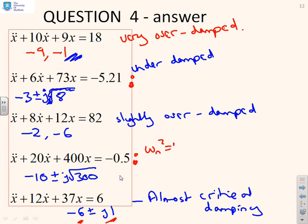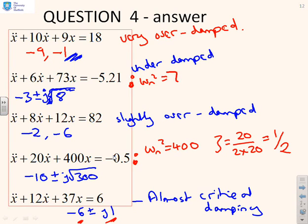So for this one, ω_n squared equals 400. And so therefore, you're going to get ζ equals 20 over 2 times 20, which is a half. So that's quite a lot underdamped, a half. And for this one above, I've got ω_n squared equals 73, which gives me ζ equals 6 over 2 root 73, which is 0.23. And so you'll find that the second one was the most underdamped of the two underdamped processes.